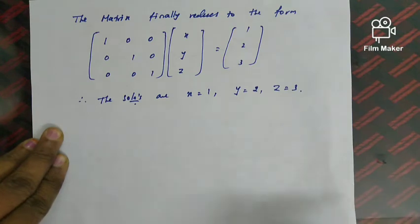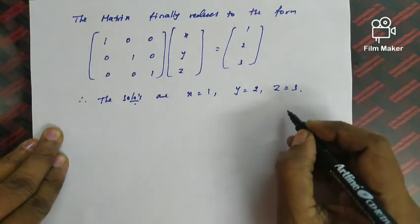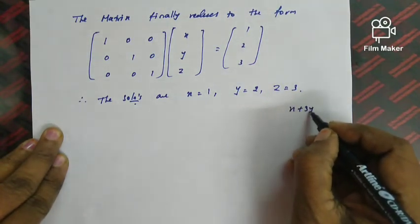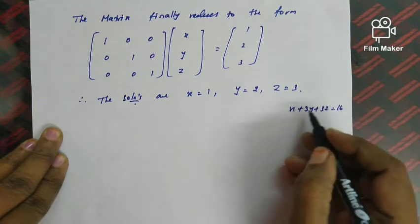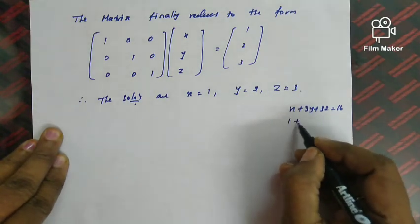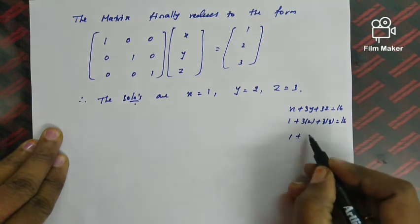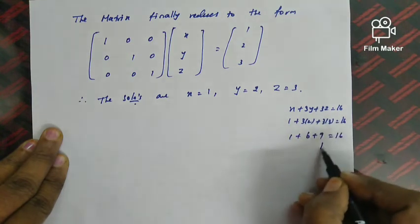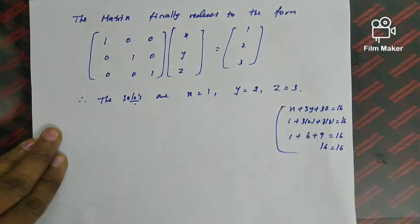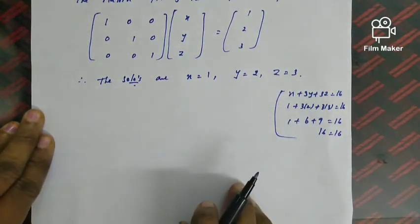We can verify our answers by substituting the values back into any one of the original equations. Taking the first equation, x + 3y + 3z = 16: substituting x = 1, y = 2, z = 3 gives 1 + 3(2) + 3(3) = 1 + 6 + 9 = 16. The equation is satisfied, confirming our answer is correct.